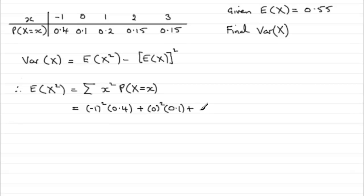And if we keep this going, we've got 1 squared multiplied by the 0.2 plus 2 squared multiplied by 0.15, and finally the 3 that is squared, and that is also multiplied by 0.15. So if you work that out, what you're going to get is 2.55.